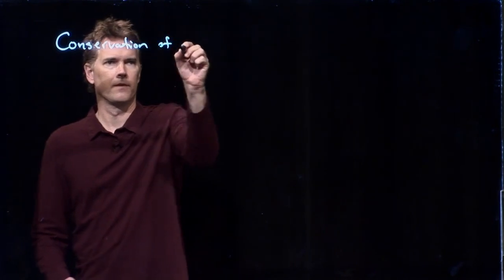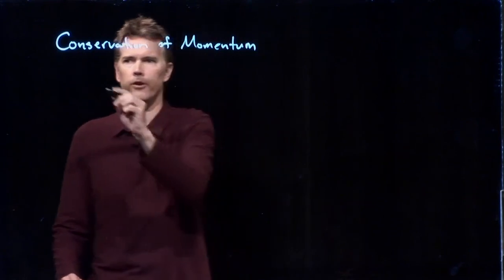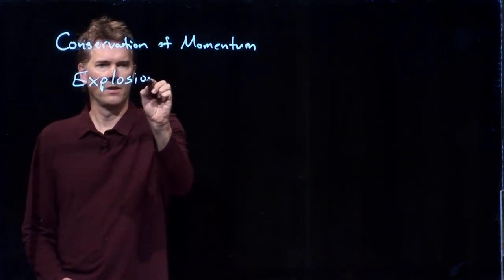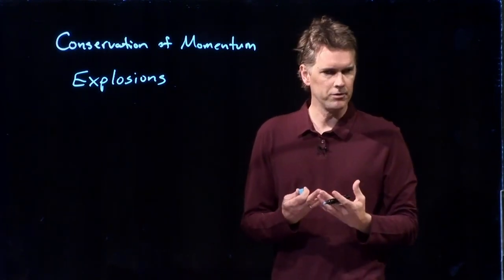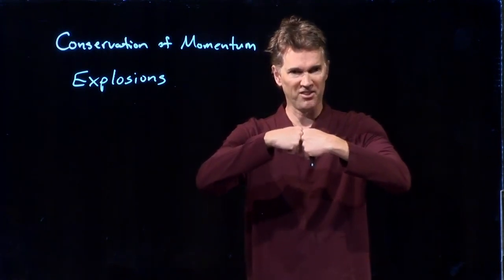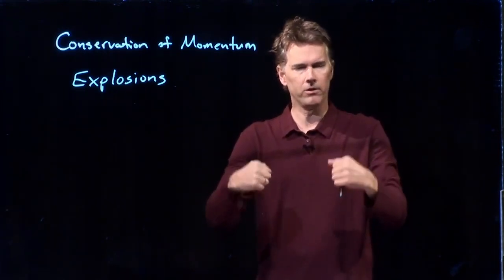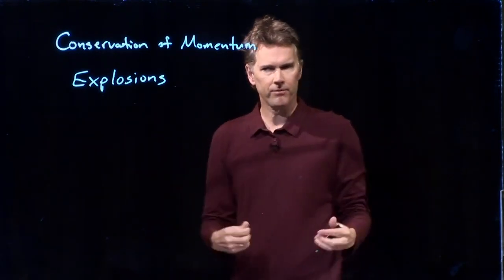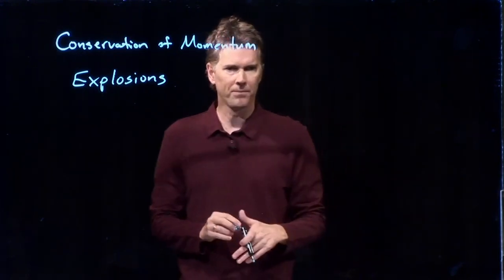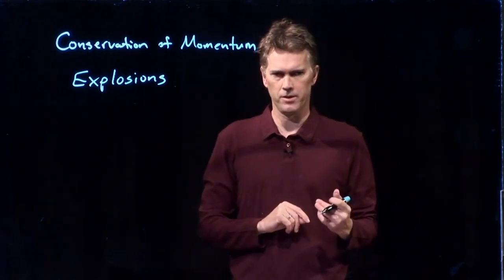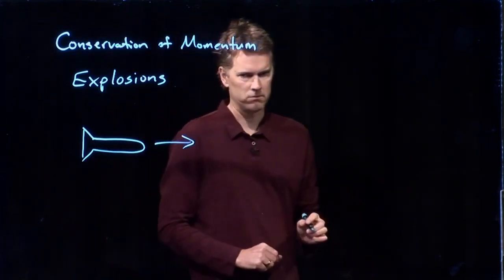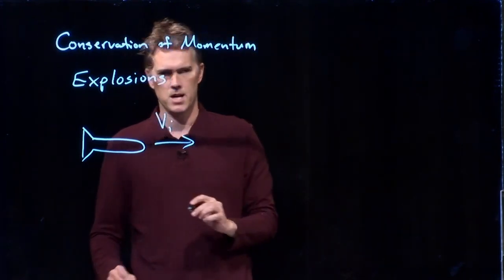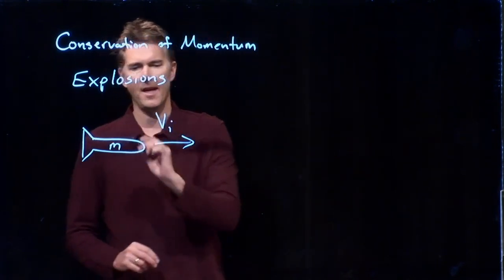We're talking about conservation of momentum. What we discovered earlier was that in collisions, momentum is conserved, but an explosion is just sort of like a collision in reverse. If two cars come together and crash and stick together, running that tape backwards looks like the cars separate and blow apart. So an explosion is really just like a collision in reverse. Let's talk about explosions with conservation of momentum. Here's our rocket ship flying along in this direction at some initial speed V_I, and we'll say it has mass M.